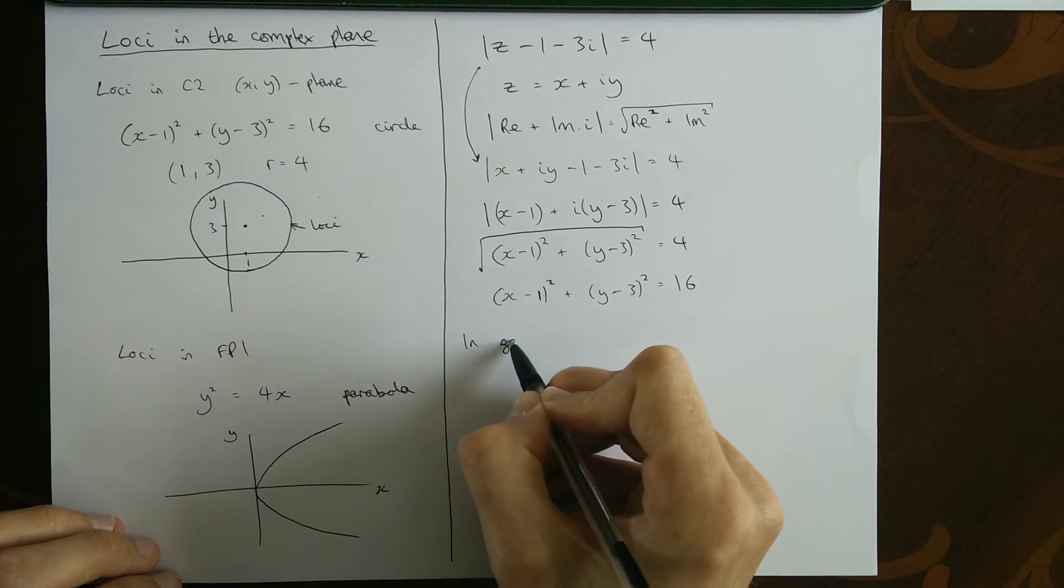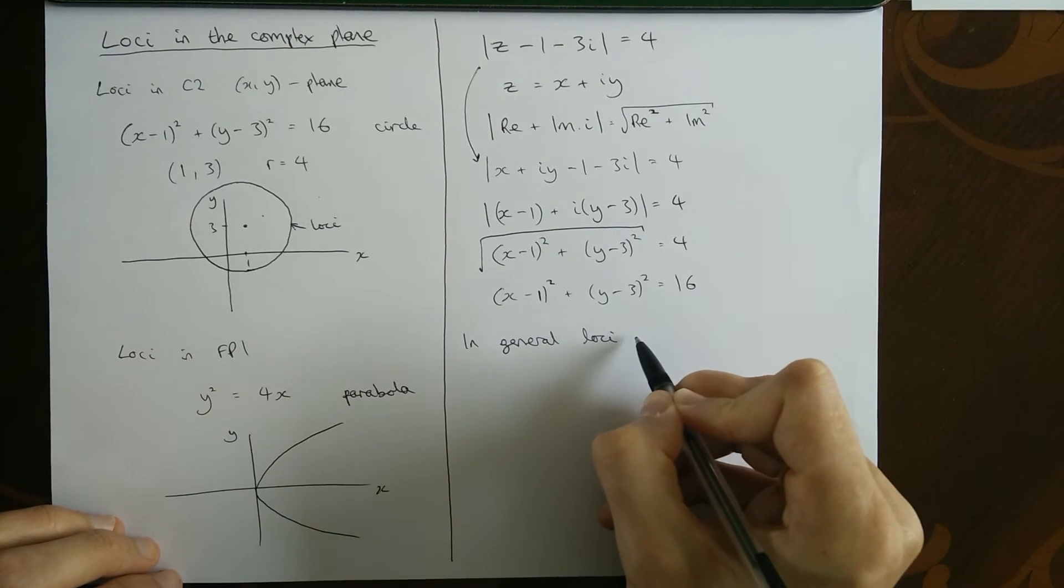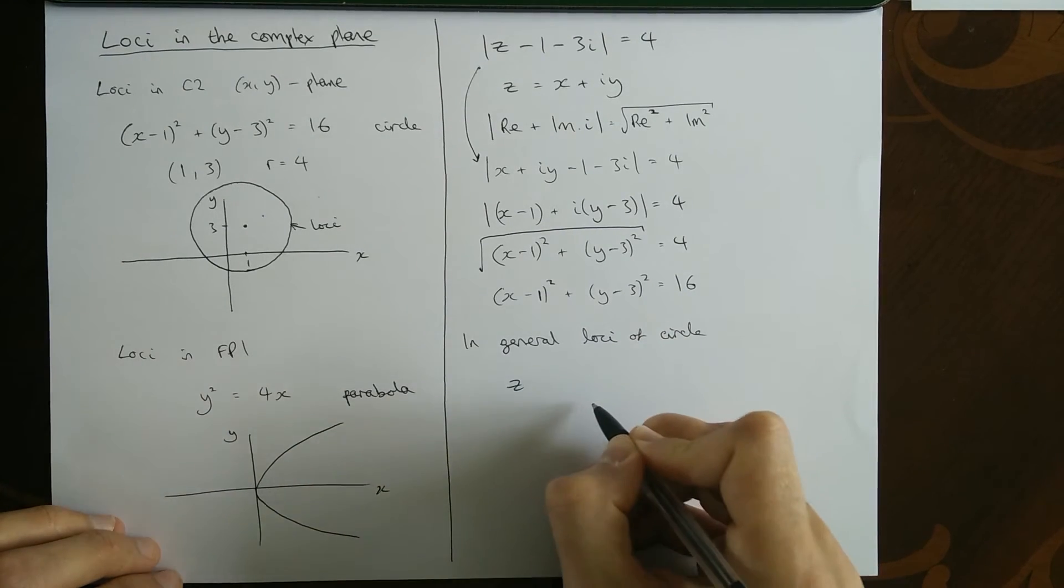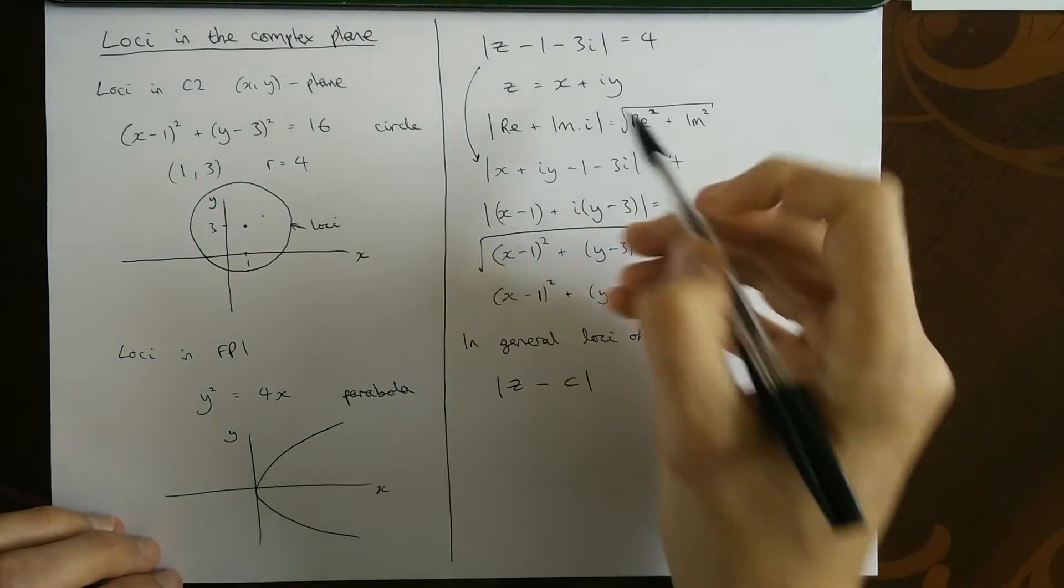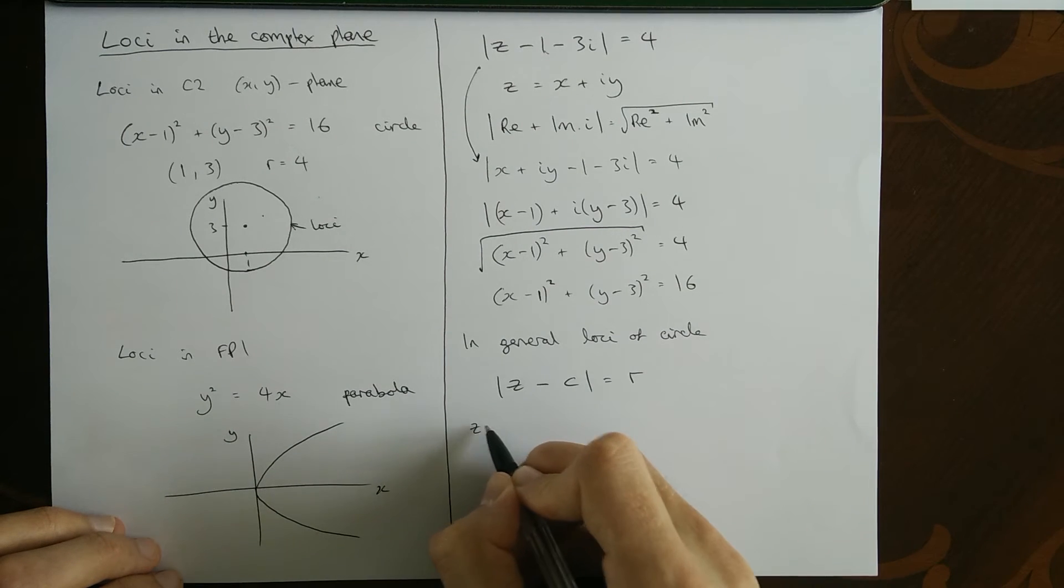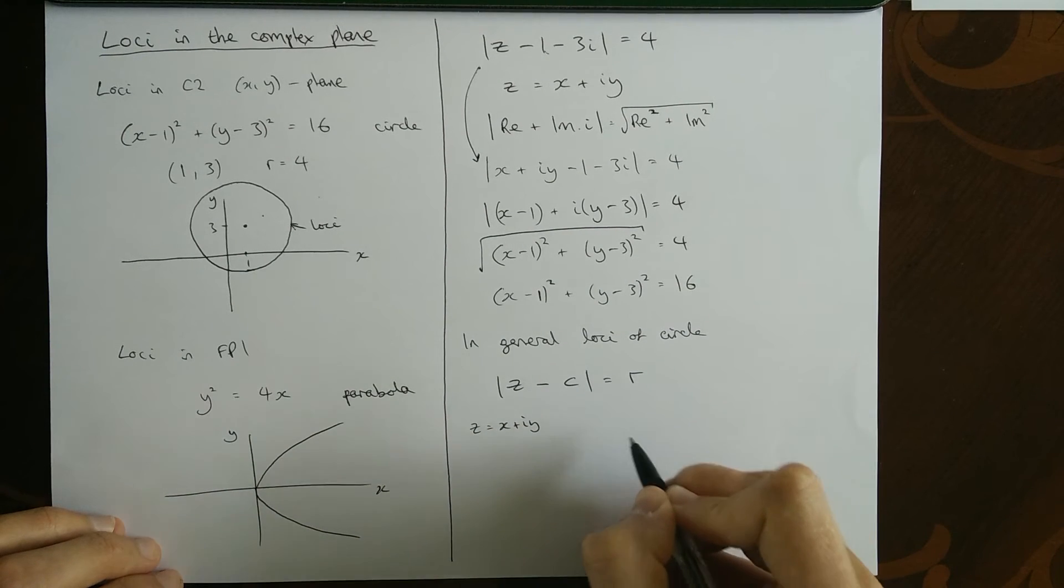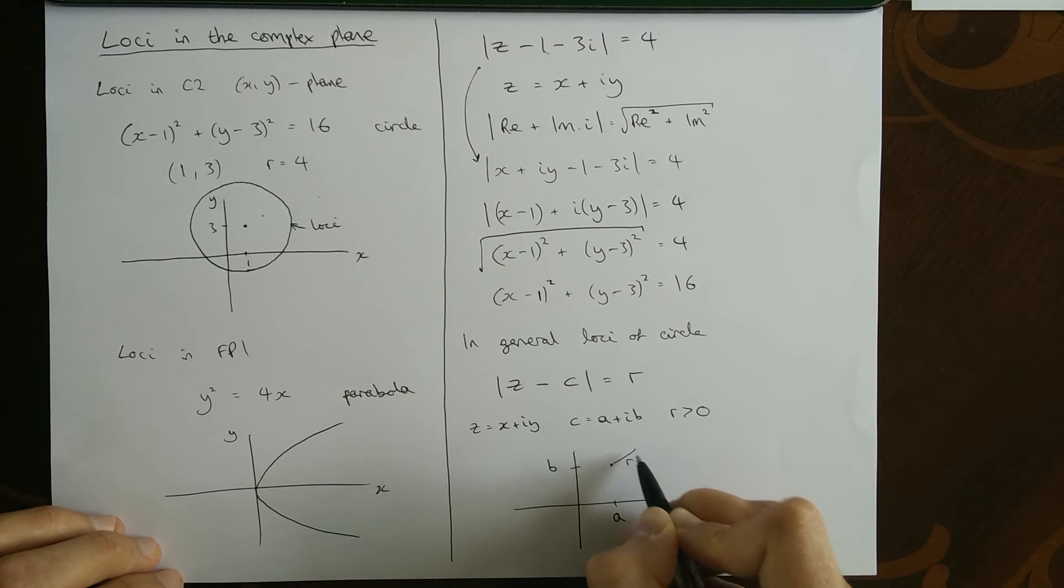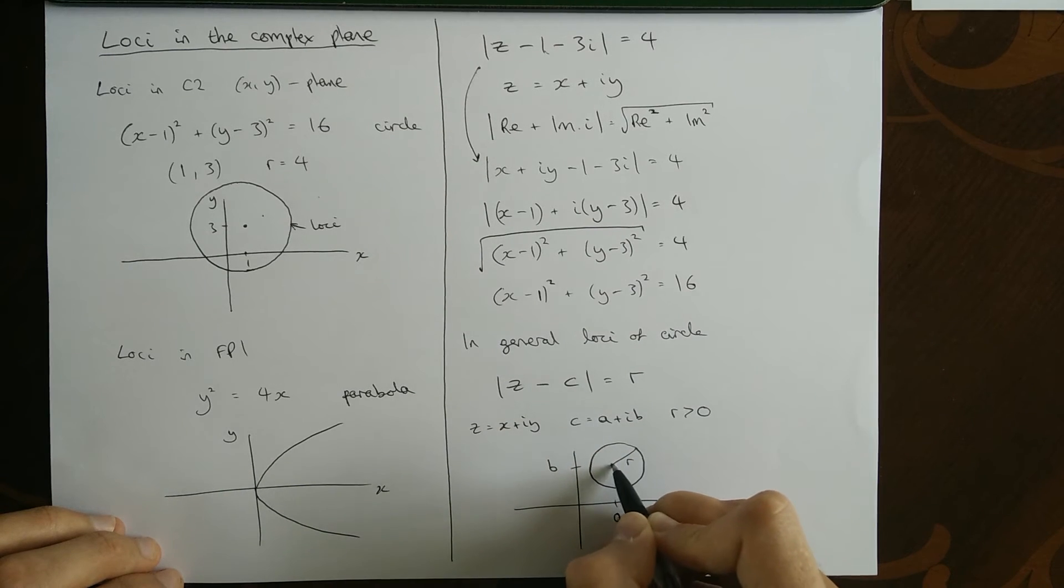So in general, we could write down a rule for what the loci of a circle is in the complex plane. It would be z, and then we'd have to have our centre, which is a complex number. So it could have two parts, or it could be one part. And that's equal to the radius, which is a real number. So z is the x and y bit. C is a complex number that's the centre, written in two parts, a and b. And r is a real number which is bigger than zero. So c would be two parts, a and b. There's our c value. And then we've got a real number for our radius, which gives us our circle here. This is centred at c.